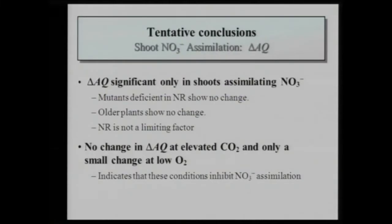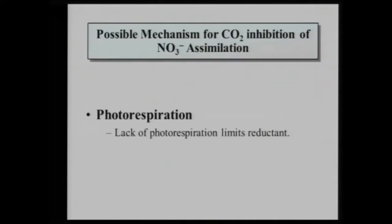Our tentative conclusions: delta AQ was significant only in shoots assimilating nitrate. Mutants without nitrate assimilation show no change. Nitrate reductase is not the limiting factor. No change in delta AQ at elevated CO2 and only a small change at low O2 — this indicates that these conditions inhibit nitrate assimilation. The possible mechanism is photorespiration: photorespiration limits reductant, which may explain why billions of dollars failed when people tried to eliminate it.